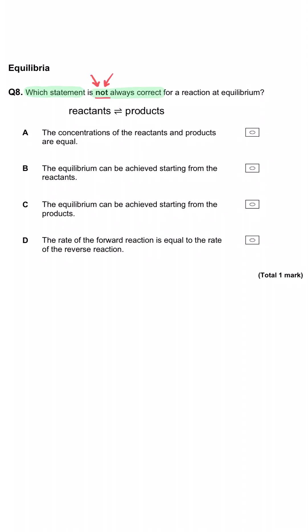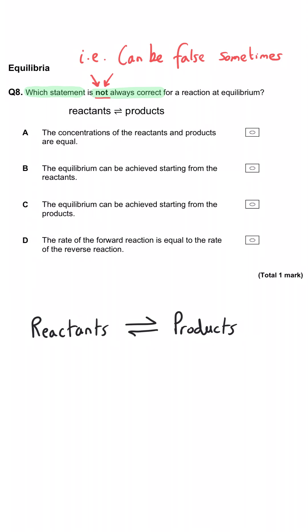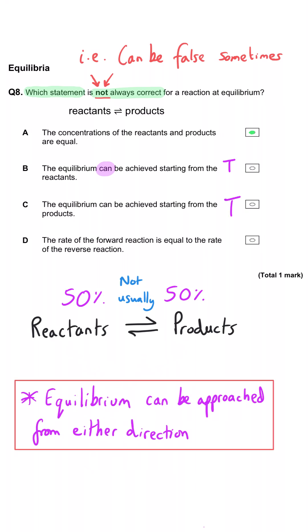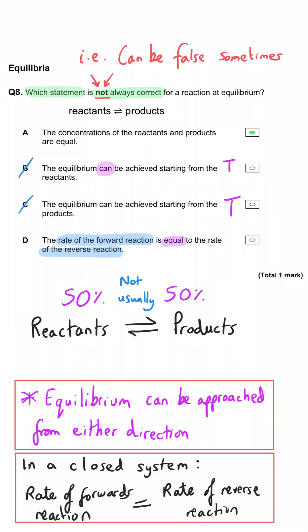Which statement is not always correct for a reaction at equilibrium? A: the concentration of the reactants and products are equal — this is in fact the answer, because they are definitely not always the same. This implies an exactly 50/50 equilibrium, which is rarely the case. So A is the correct answer. B is true: equilibrium can be achieved starting from reactants or products. C is also true: it can be approached from either direction. D is true: the rate of the forward reaction equals the rate of the reverse reaction, which is the definition of equilibrium. So B, C, and D are true; A is false.